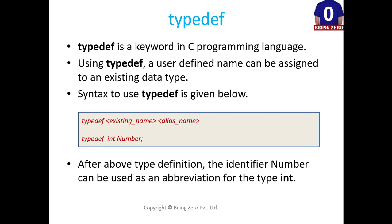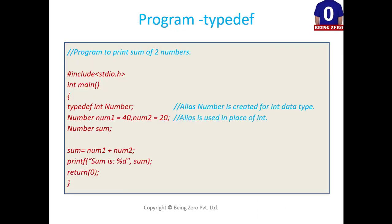Let's understand more on the typedef through a program. Here is the program to print sum of two numbers. Within the main function we have created an alias number for int data type. And then, in the next statement we have defined two variables num1 and num2 using the number which is an alias rather than the int.